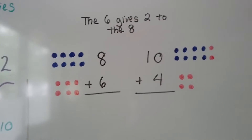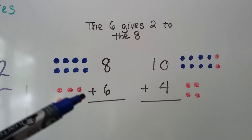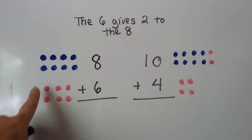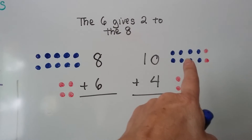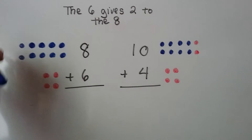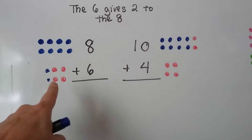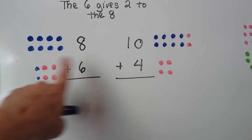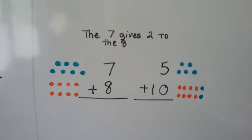Let's try it with these. We have 8 plus 6. The 6 is going to give 2 to the 8 to make it a 10, so we're going to take away 2 and give it to the 8. Now we have 10 plus 4. We had 8 on this side and 6 on this side, and we took 2 away so now it's a 4 — see the 4 red ones. We gave it to this side and now we have 8, 9, 10.